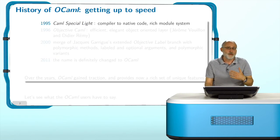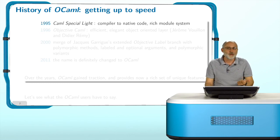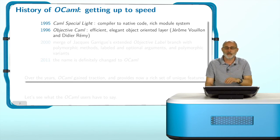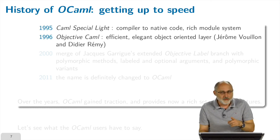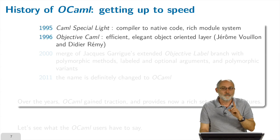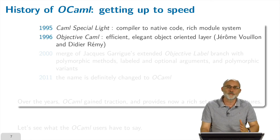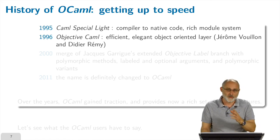Things started moving very quickly in the middle of the 1990s. In 1995, CAML Special Light arrived with a native compiler and a rich, groundbreaking module system. Then in 1996, another incredible feature arrived: Objective CAML — and now you start to see why it is called OCaml today. Jérôme Vouillon and Didier Rémy added an efficient and elegant object-oriented layer to the system, still with type inference. This was a major result at the time, because before that, everybody was convinced it was not possible to have object orientation and polymorphic type inference together — but it was done by these people.